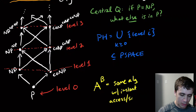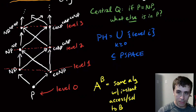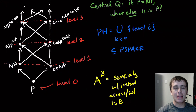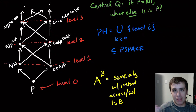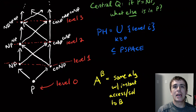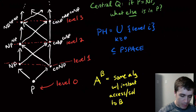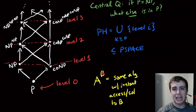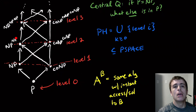So if B is just a single language, you have an instant solver for B. You can instantly solve B in zero time. It takes time to write down the question of whether the string is in B or not, but you can have instant access to it. This is not necessarily the most natural way of thinking about computation, but it turns out to be very relevant here.